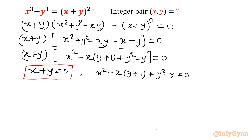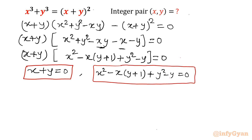So one equation is x plus y equals 0 — this is one solution. The second solution is x² minus xy plus 1 plus y² minus y equals 0. From the first equation, x equals minus y, meaning x is 1 and y is minus 1, or x is 2 and y is minus 2, and so on. But let us start by considering the second equation first.